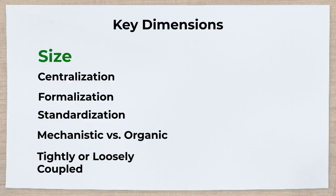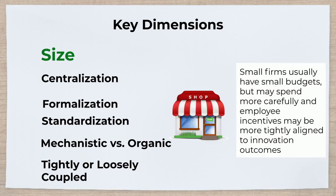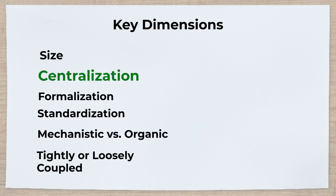With respect to size, large firms usually have larger budgets and reap economies of scale and learning in their R&D activities. However, while small firms usually have smaller budgets, they may also spend more carefully, and employee incentives may be more tightly aligned to innovation outcomes.